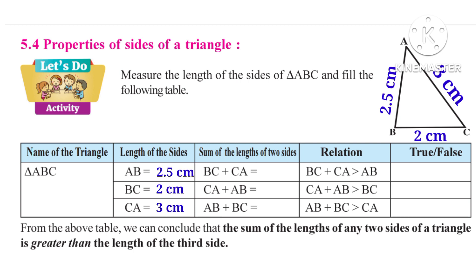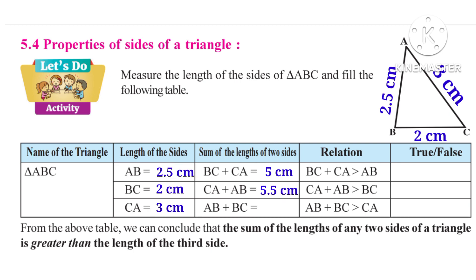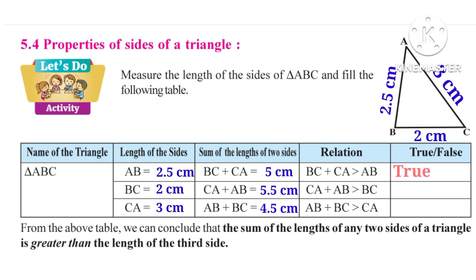Now 2 plus 3 is equal to 5 cm, so BC plus CA is 5 cm. Now 3 plus 2.5 is equal to 5.5 cm, so CA plus AB is equal to 5.5 cm. Now 2.5 plus 2 is equal to 4.5 cm, so AB plus BC is 4.5 cm. Observe that 5 is greater than 2.5 cm, so we can say that BC plus CA is greater than AB. So it is true.